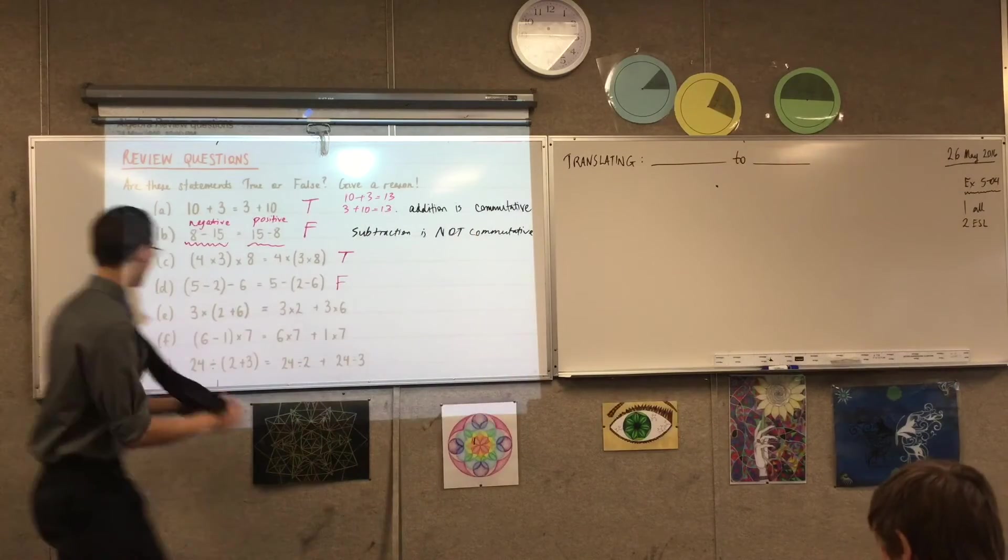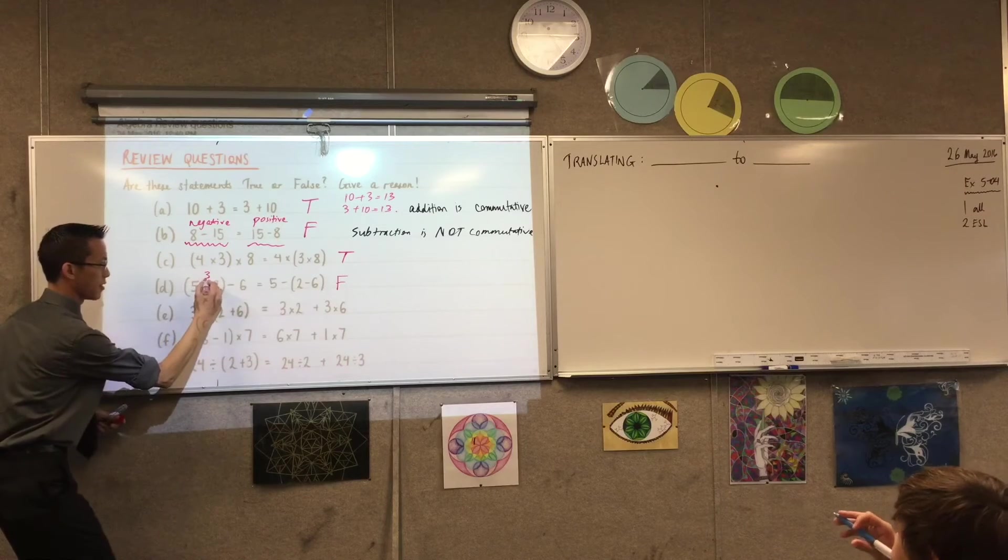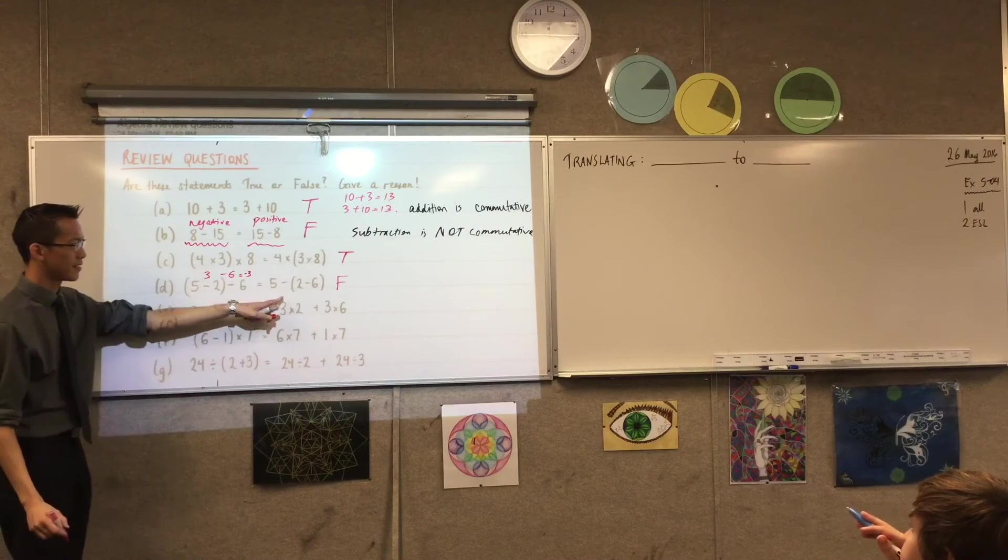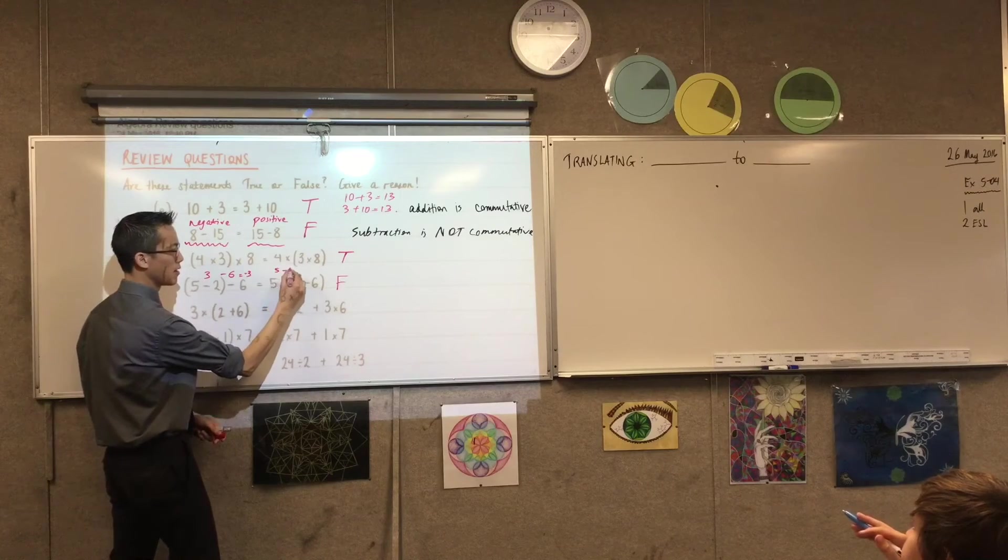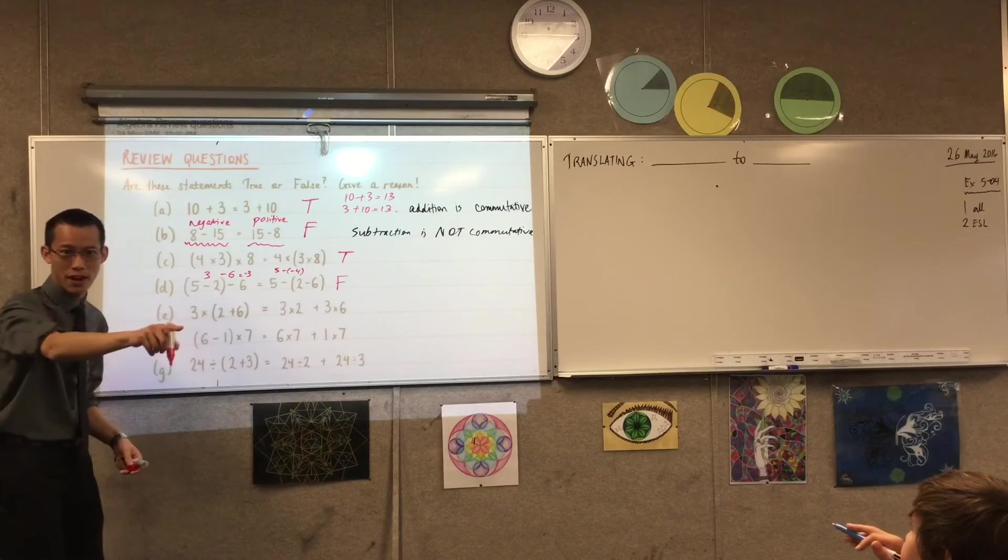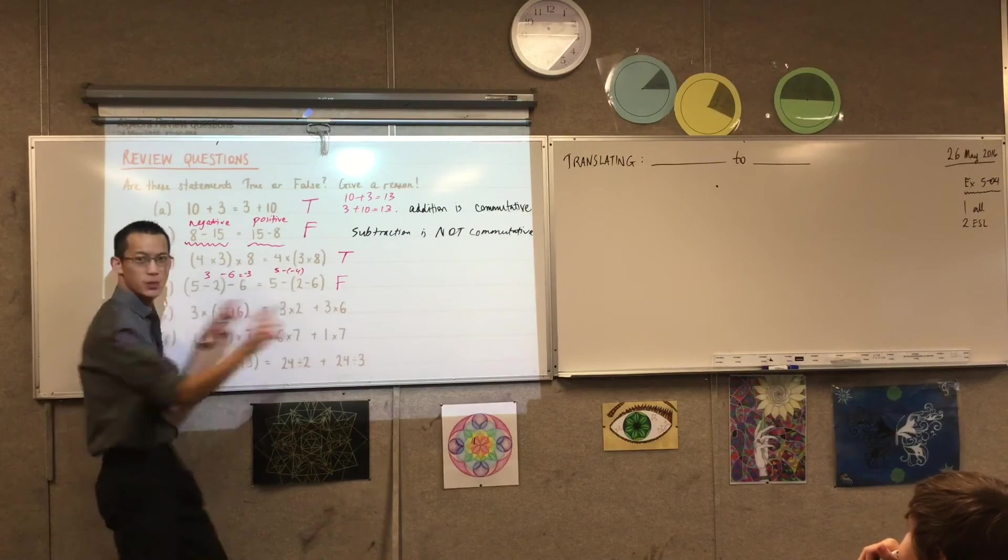Because 5 minus 2 minus 6. Because 5 minus 2 is 3. Then 3 minus 6 is negative 3. So then, for the next question, 5 minus negative 4 would be negative 9. Oh, he's very good with the 5 minus negative 4. But what happens with those two negatives? Because there's like a switching direction here, right?